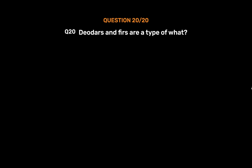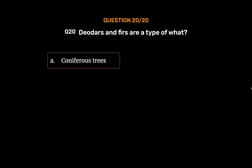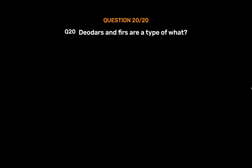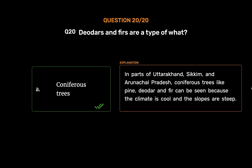Question number 20. Devdars and firs are a type of what? Option A: Coniferous trees. Option B: Deciduous trees. Option C: Shrubs. Option D: Herbs. The correct answer is Option A, Coniferous trees. In parts of Uttarakhand, Sikkim and Arunachal Pradesh, coniferous trees like pine, deodar and fir can be seen because the climate is cool and the slopes are steep.